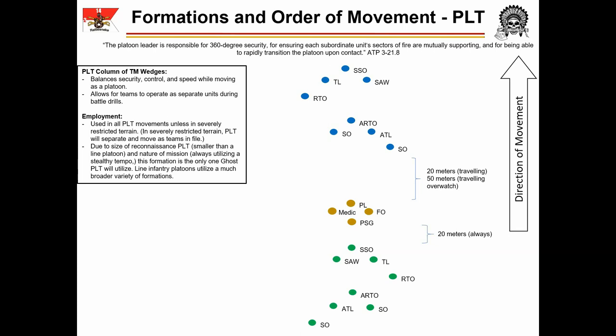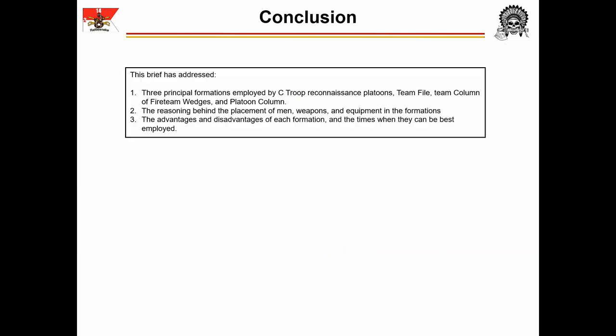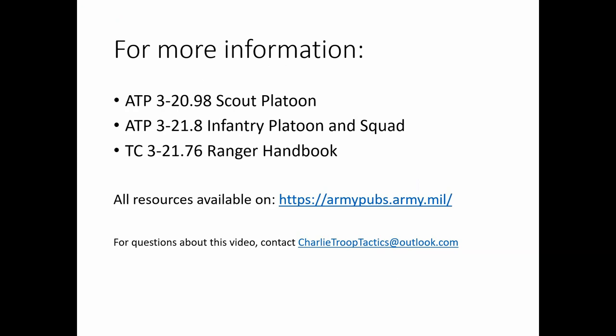Note, however, that line infantry platoons have a much greater variety of formations due to their increased mission set. This presentation has addressed the following: first, the three principal formations employed by sea troop reconnaissance platoons — team file, team column of fireteam wedges, and platoon column; second, the reasoning behind the placement of men, weapons, and equipment in the formations; third, the advantages and disadvantages of each formation and the times when they can be best employed. In preparing this presentation, the following resources were used. For questions or comments, email charlietrooptactics@outlook.com.